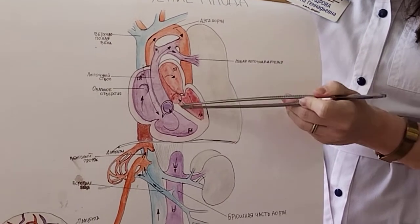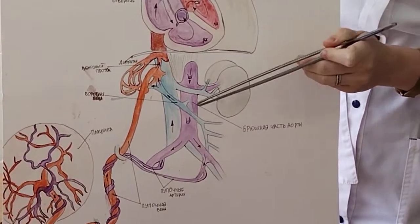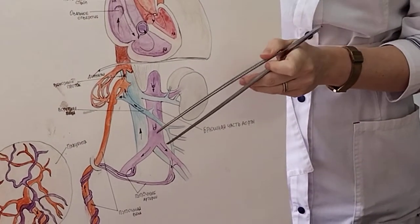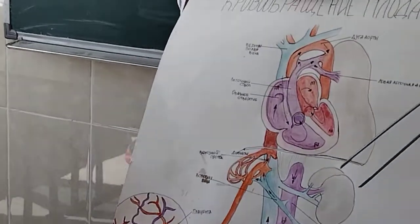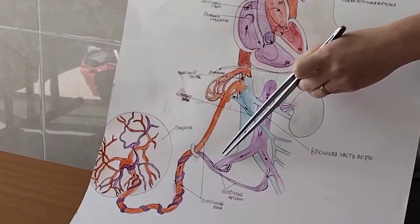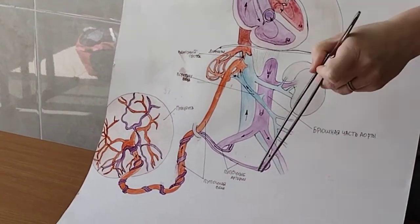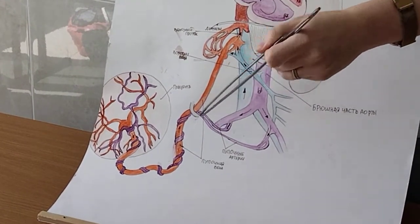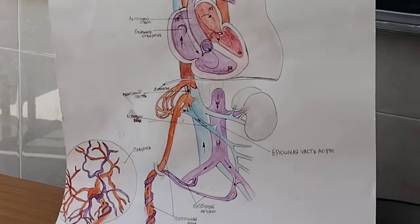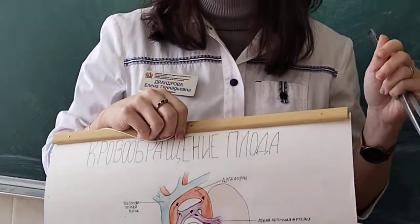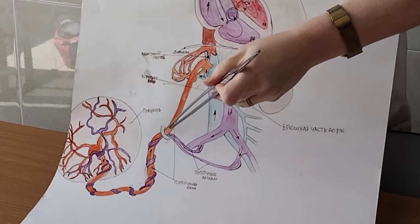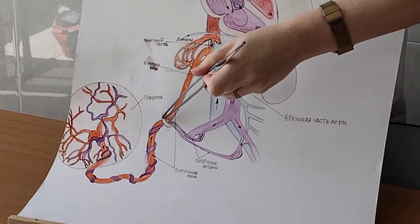So descending then to the abdominal aorta. The abdominal aorta at the level of the fourth lumbar vertebra gets bifurcated into two common iliac arteries, right and left. Then common iliac arteries bifurcate into external and internal. And one of the branches of the internal iliac arteries is the umbilical artery. The umbilical artery lies in the medial umbilical fold. Yes, we have already studied it. And so these umbilical arteries reach the level of the umbilicus.